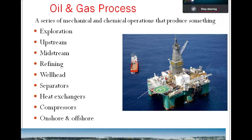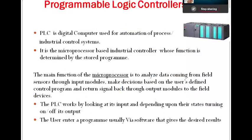We will talk about PLCs. A PLC is a digital computer used for automation and process industries — it is the brain of the automation industry. All operations in oil and gas, fertilizer, chemical, and cement industries are controlled by a controller. A PLC is a microprocessor-based industrial controller whose function is determined by stored RAM. The main function of the microprocessor is to analyze data coming from field sensors such as temperature sensors, flow sensors, and level sensors.